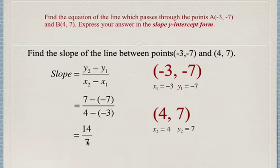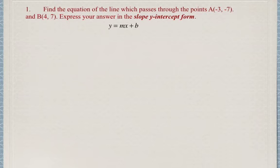In the denominator we have 4 minus negative 3, which is 4 plus positive 3, which is positive 7. And 14 over 7 is 2. So now we have the slope of the line, and what we can do is substitute into our formula y equals mx plus b, given the values we have.